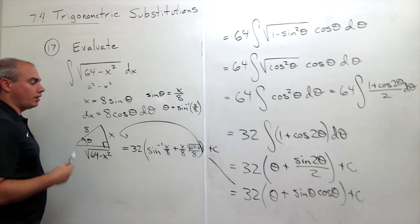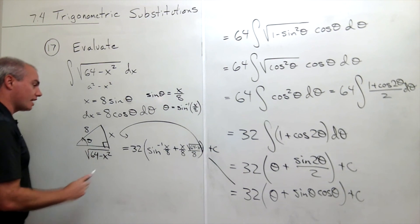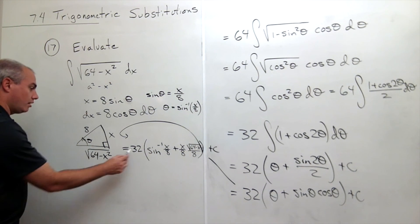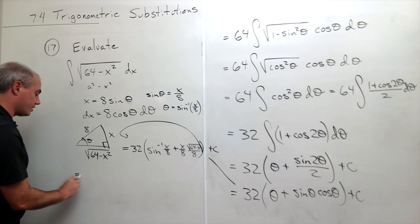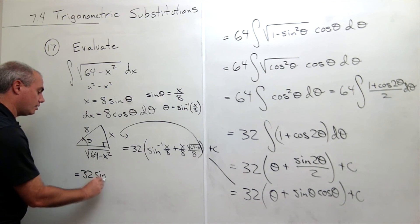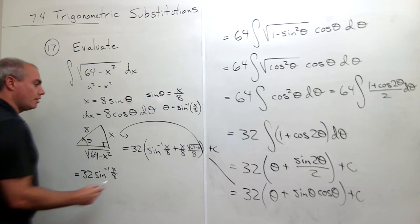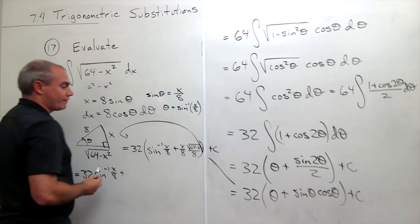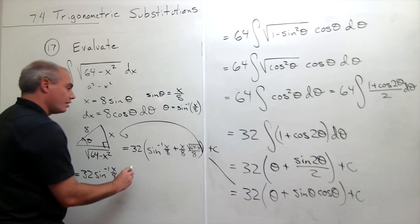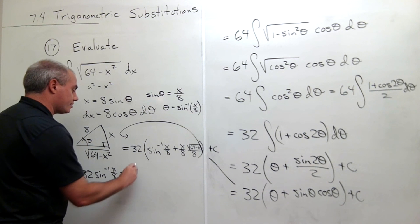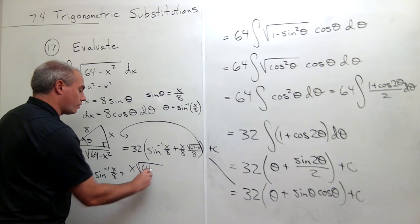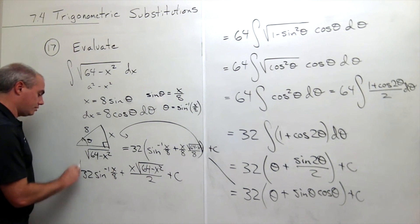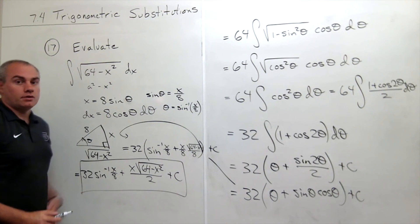Let me rewrite the final answer more clearly. Multiplying the 32 through: this equals 32 times sine inverse of x over 8, plus — when I multiply 32 in, on the bottom I have 64, so I have 32 over 64 — which simplifies to x times the square root of 64 minus x squared over 2, plus C. And that's our answer.